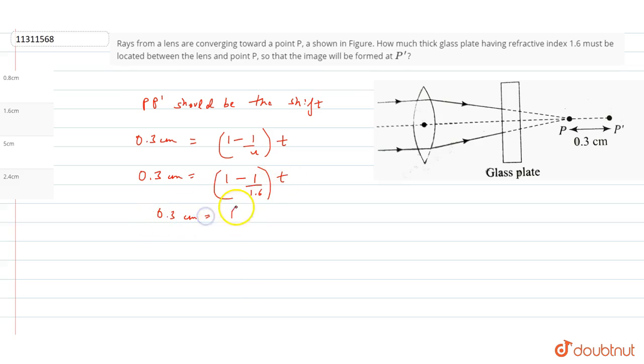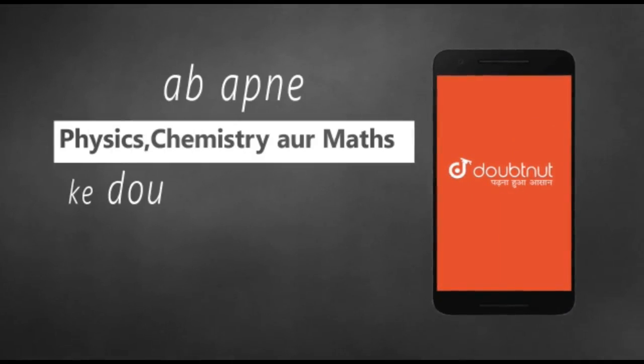This should be 0.8 cm. So the thickness of glass blade having refractive index 1.6 must be 0.8 cm for the 0.3 cm shift.